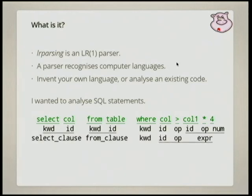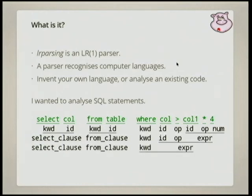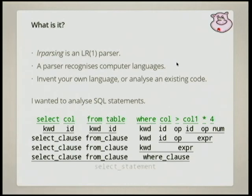Then it'll say: this thing here on the end, that's an expression, so I can just call that an expression. We continue down. On the other end we have SELECT and FROM clauses, we reduce it to another expression, we reduce it further. What you end up with is a tree-like structure, which is usually called the parse tree. So what any parser does is take in a sequence of characters and output a parse tree.